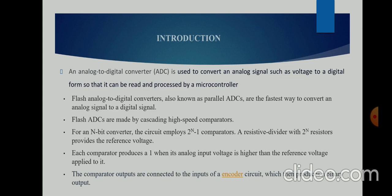For the introduction, an analog to digital converter is used to convert an analog signal such as voltage into a digital form so that it can be read and processed by a microcontroller. Flash ADCs are also known as parallel ADCs and are the fastest ADCs used in electronic components and instruments. Flash ADCs are made by cascading high speed comparators. The high speed comparator we used is the TIQ comparator. For an n-bit converter we use 2^n minus 1 comparators.